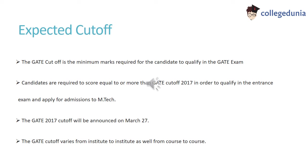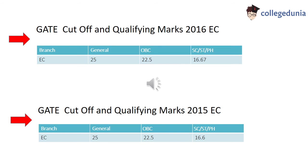The GATE 2017 cut-off will be announced on March 27. The cut-off varies from institute to institute as well as from course to course. GATE 2016 qualifying marks were 25 for General Category, 22.5 for OBCs and 16.67 for SC/ST and PWDs.